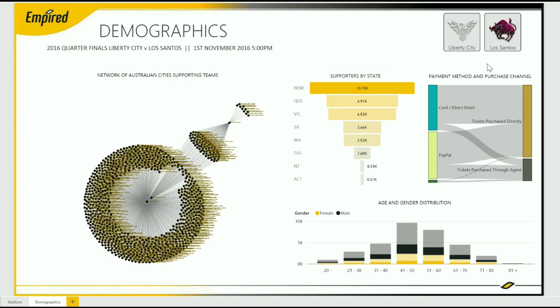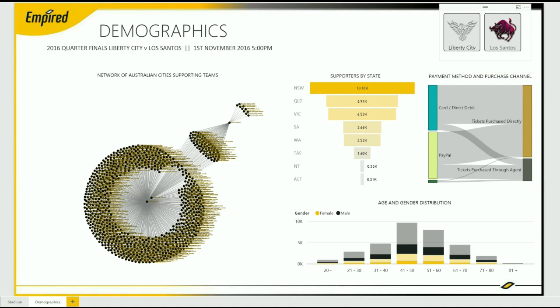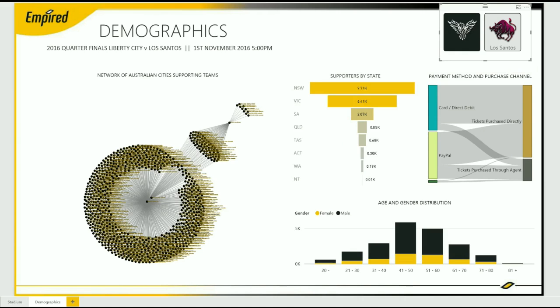The right half of the demographics report displays a high level view of consumer demographics involved in the event to date. These visuals can dynamically drill down the entire report by selecting team, state, payment type, age bracket, or gender.